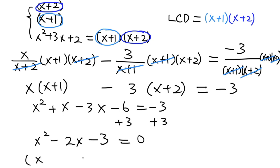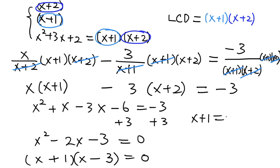Now let's factor the left-hand side. 3 is 1 times 3. The sum of the two numbers must be negative 2, so we use a negative sign, giving us x plus 1 and x minus 3. So whether x plus 1 equals 0 or x minus 3 equals 0: if x plus 1 equals 0, x is negative 1; and if x minus 3 equals 0, x equals 3. So now we have two solutions.